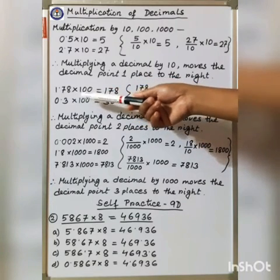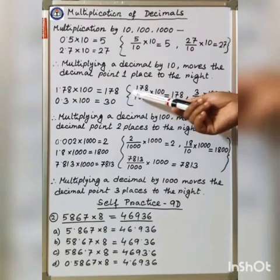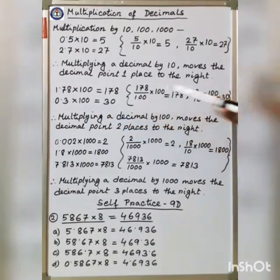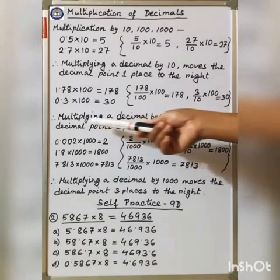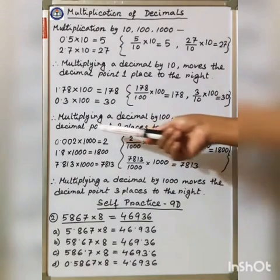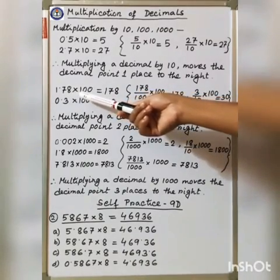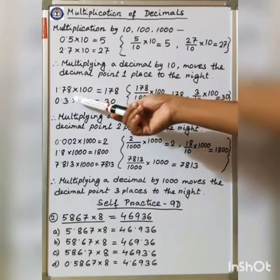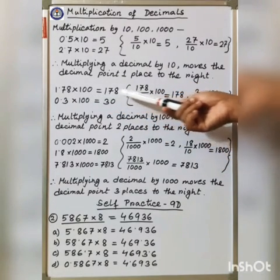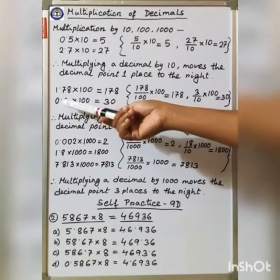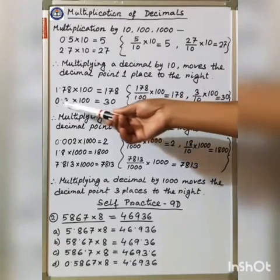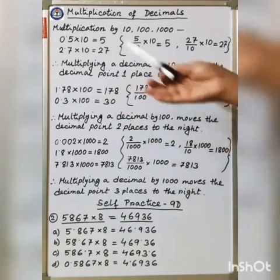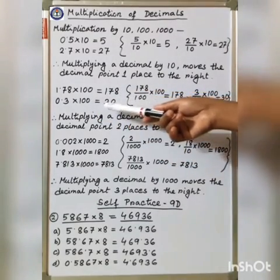Now 0.3 into 100 is equal to 30. Therefore, multiplying a decimal by 100 moves the decimal point two places to the right. So 2 places to the right — count here: 2 zeros. Move the decimal point two places to the right: right side one place is 7 and another place is 8, so the decimal point goes here and the answer is 178. If there is only one digit, put a zero for the next digit, making it a 2-digit number, then place the decimal point after 2 digits. The answer is 30.